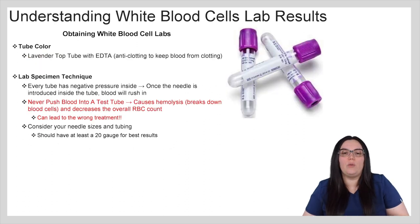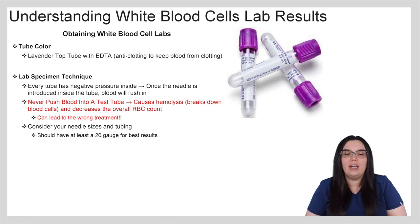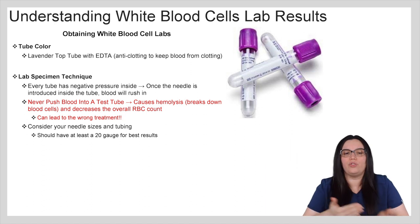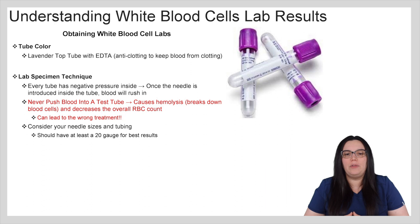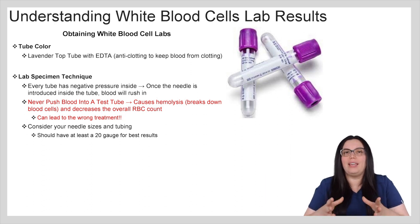When it comes to obtaining white blood cell count labs, you're going to use the lavender top tube with EDTA — it has an anti-clotting agent to keep blood from clotting within the tube. Every tube has negative pressure inside, so once the needle is inserted, blood is supposed to rush in. You never want to push blood into a test tube because that can cause hemolysis — the breaking down of blood cells — which will decrease the overall red blood cell count and can lead to wrong treatment. Always consider your needle size and tubing; it should be at least a 20-gauge needle for best results.